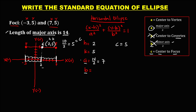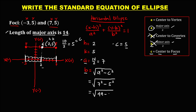Since we now have values for a and c, we can solve for b. The formula is b equals the square root of (a squared minus c squared): square root of (7 squared minus 5 squared), which is square root of (49 minus 25), so b equals the square root of 24.